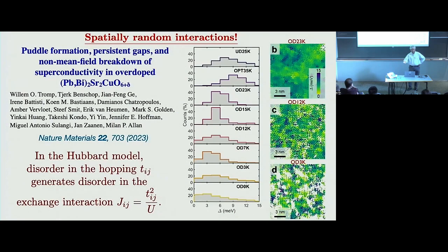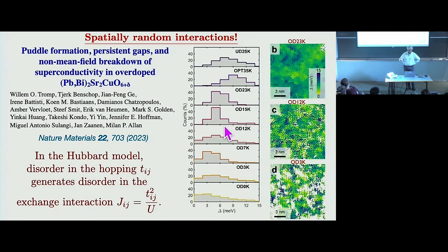Let me motivate this by this experiment on the cuprates — this is STM, the so-called STM gap map. We're all very familiar that the gap has a variance as large as the mean, and so there are very strong interactions at play here. Whether these are induced by impurities or self-induced is a separate question, but it's clear that they're there.